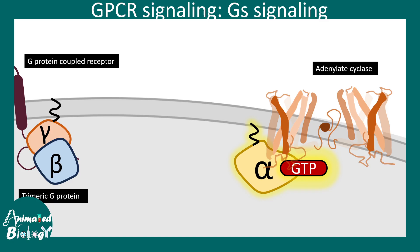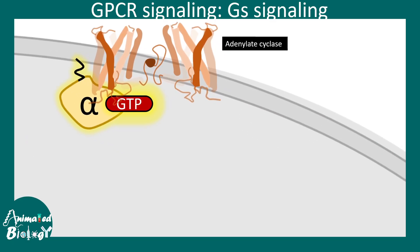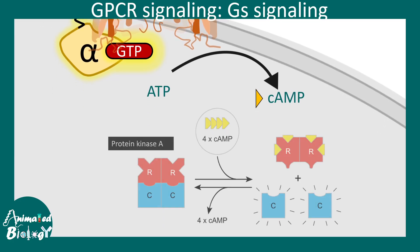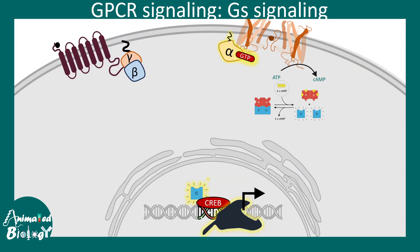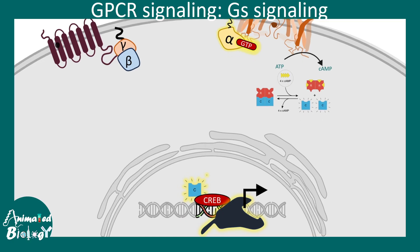So the moral of the story is: ligand binding triggers downstream processes that activate adenylate cyclase, which converts ATP into cyclic AMP. Cyclic AMP then binds to the regulatory subunit of protein kinase A. The catalytic subunit dislodges, goes into the nucleus, interacts with factors like CREB, and gives rise to transcription of many genes.